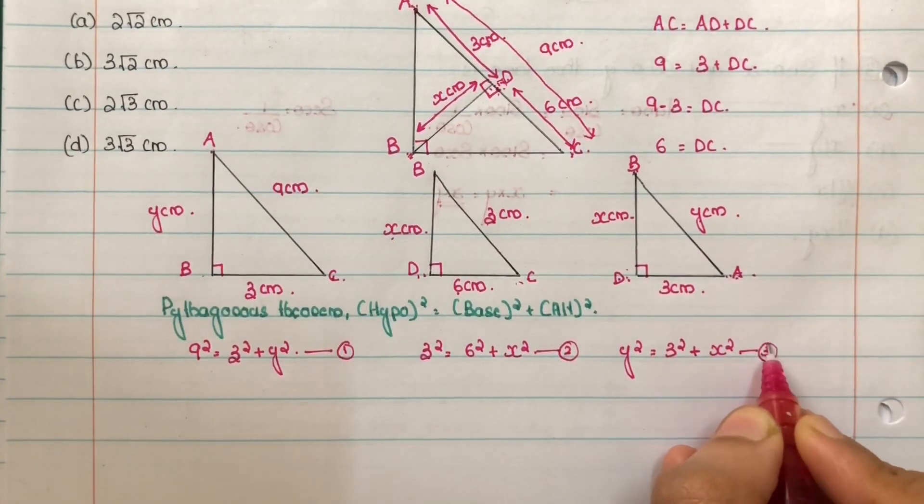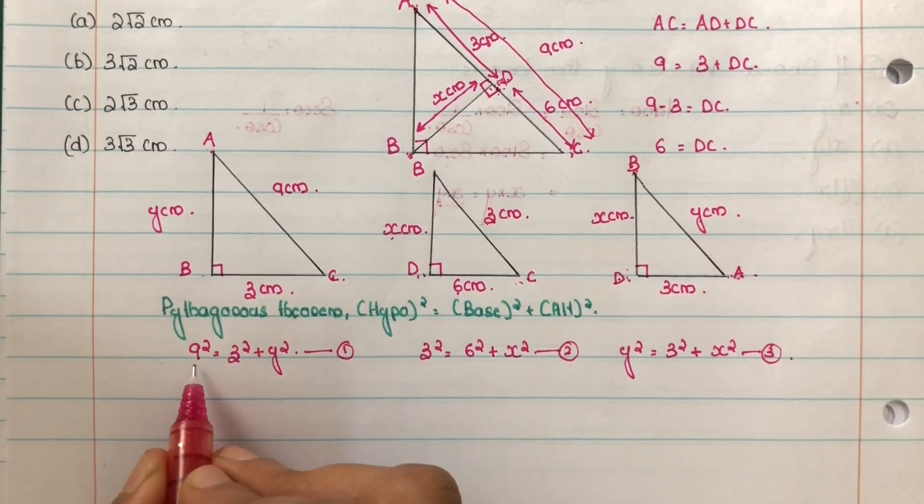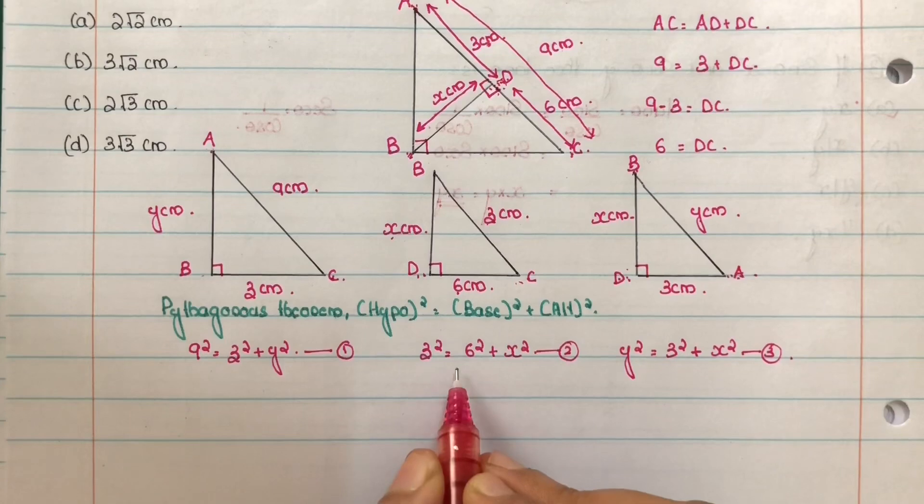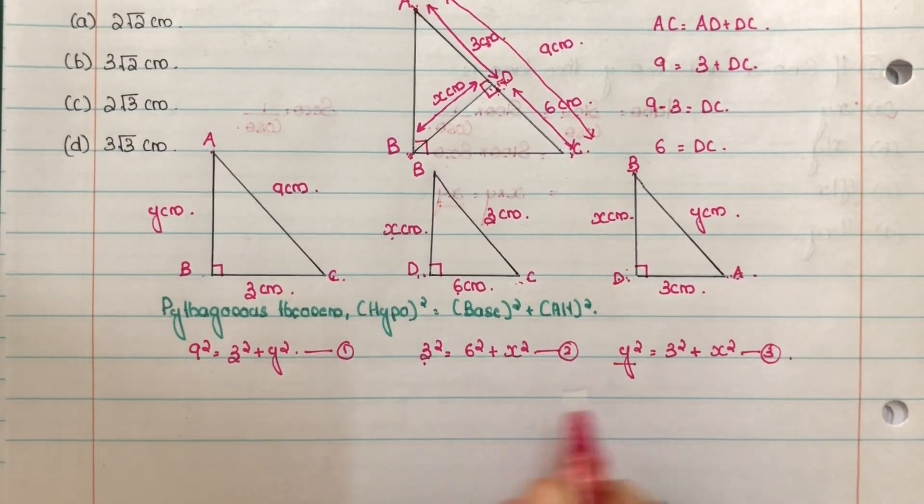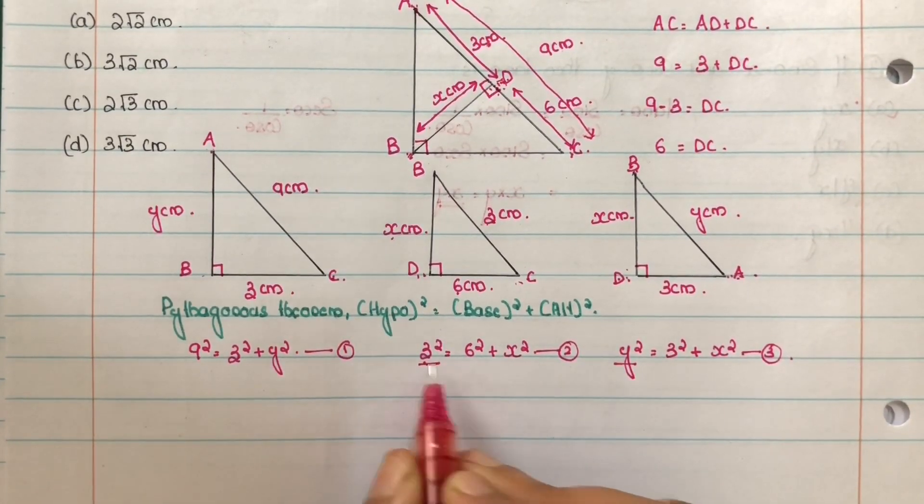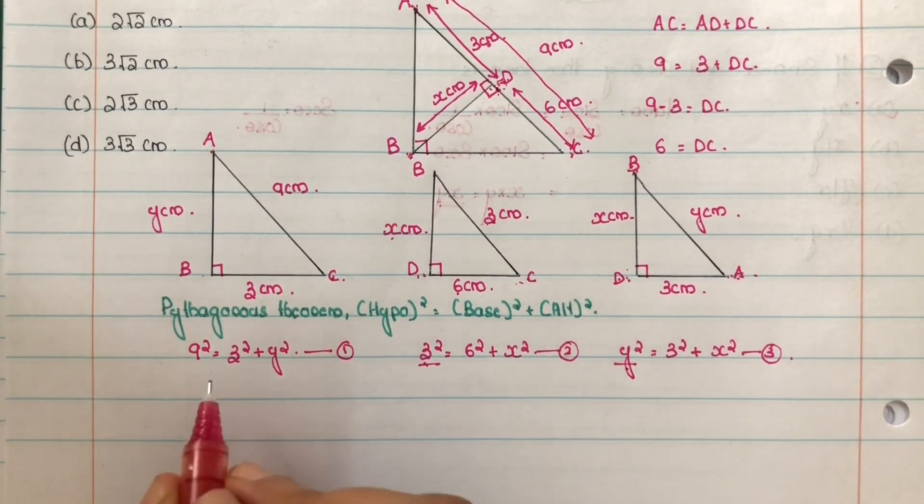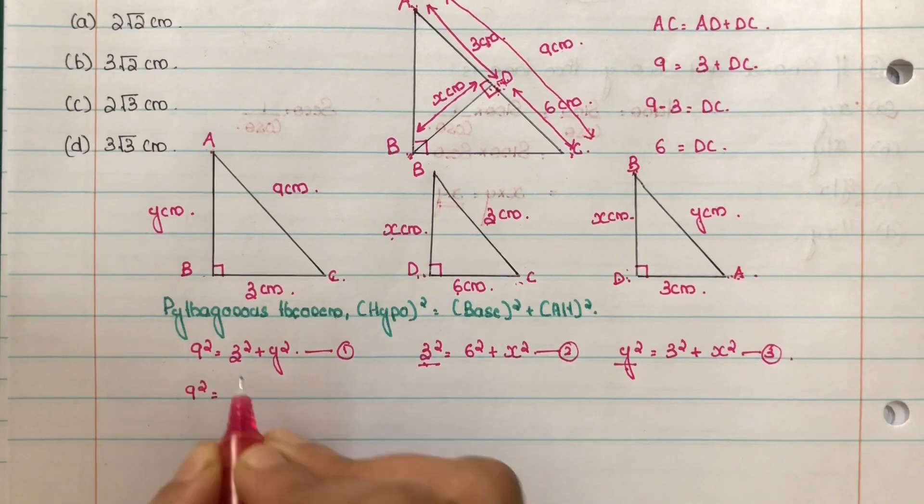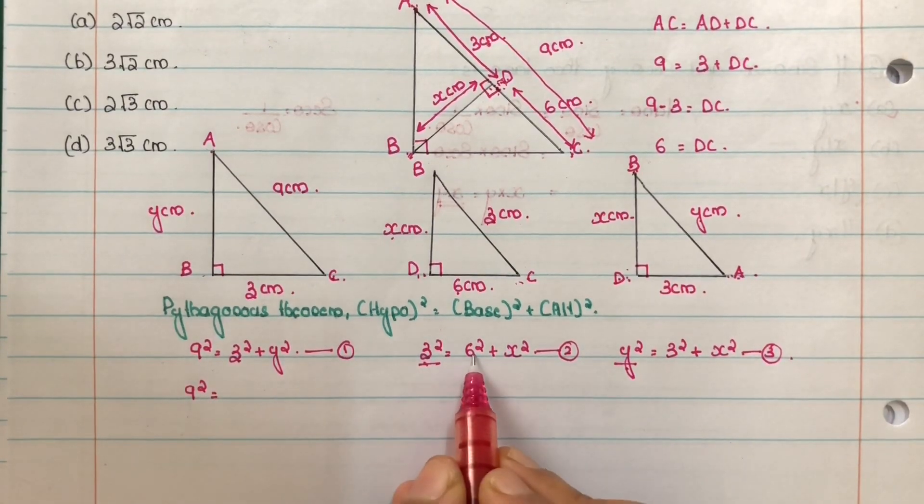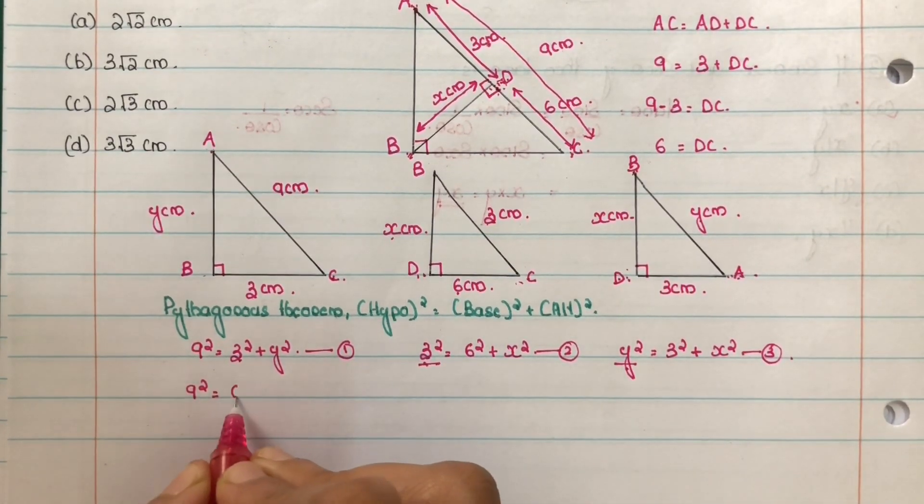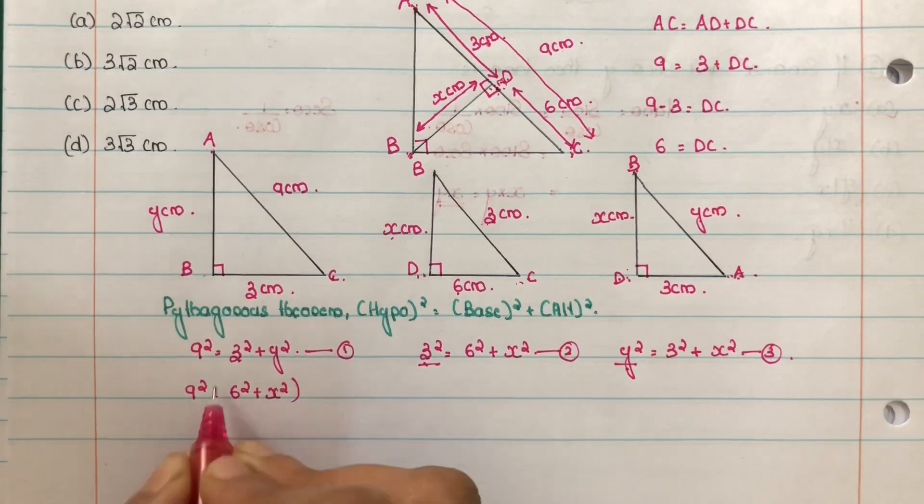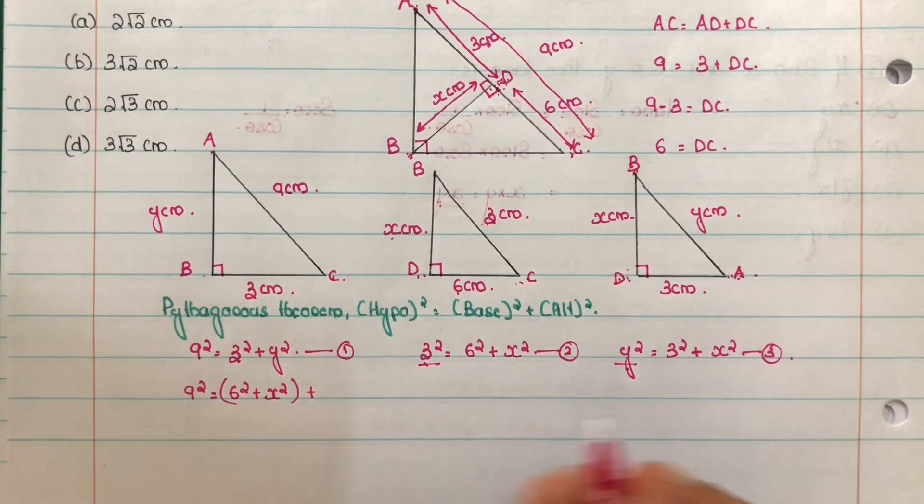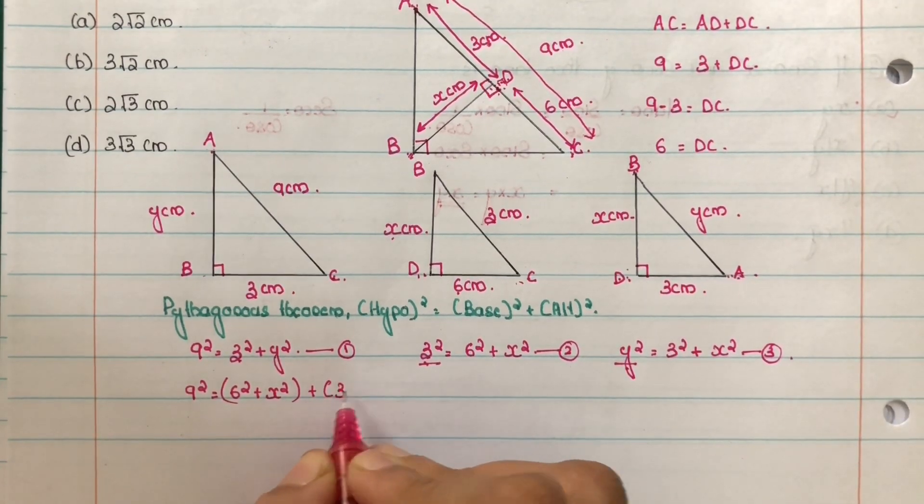Equation number 1, 2, and 3. First equation, 9 square is equal to z square plus y square. Second and third, we will take z square and y square values. Z square and y square values, equation number 1, substitute. 9 square is equal to z square. Z square is equal to 6 square plus x square. Equation 1, substitute, plus y square. From equation 3, y square is equal to 3 square plus x square. This equation number 1, we are substituting.